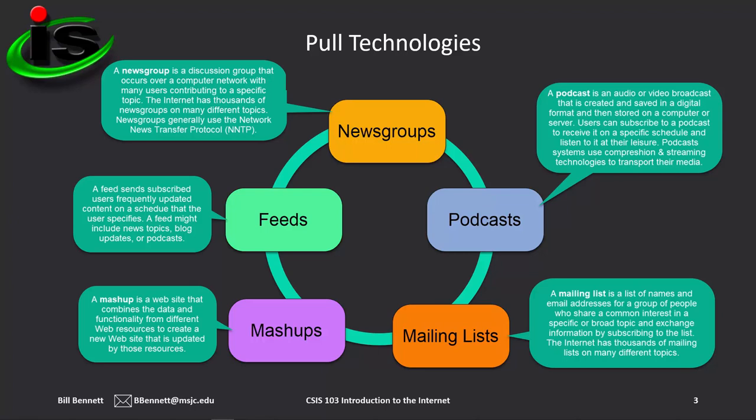The Internet continues to evolve and change with the needs of its users. Today's Internet allows you to identify the content that you want and have it sent to you at your request, and possibly on a chosen schedule. You can group the modern Internet's many communication methods into two basic categories: push and pull. Pull technology is called pull because subscribers pull content to their devices when they want it. Examples include mailing lists, news groups, feeds, podcasts, and mashups. Push technology sends content to users who request it. Examples of push communications are instant messaging, online social networks, photo and video sharing sites, and blogs.